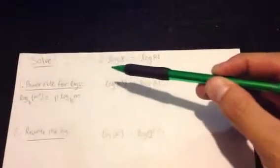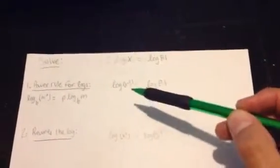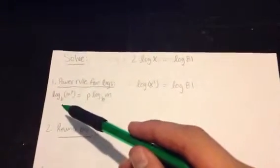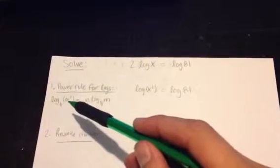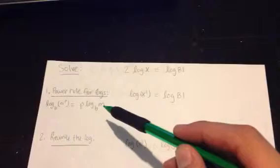So, you start with 2 times the log of x is equal to log of 81. The first thing you're going to need to do is use the power rule for logs, and the power rule states that log base b of m raised to p is also the same as p times the log base b of m.